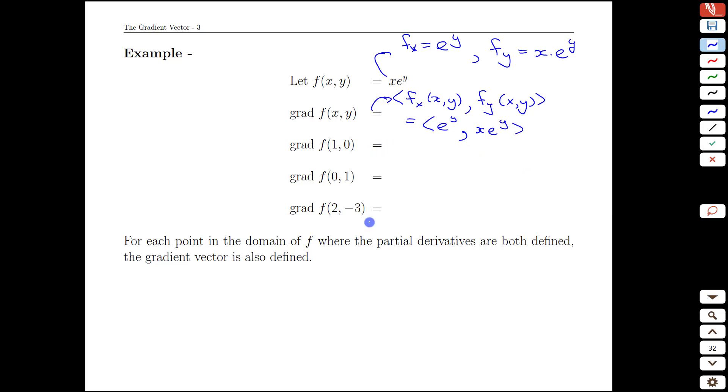Then we can evaluate that at different points. Let's plug in the point 1, 0 and just be careful with what is x and what is y. We are subbing in x equals 1, y equals 0. So we are subbing in e to the 0 and 1 times e to the 0 and that would be the vector 1, 1.